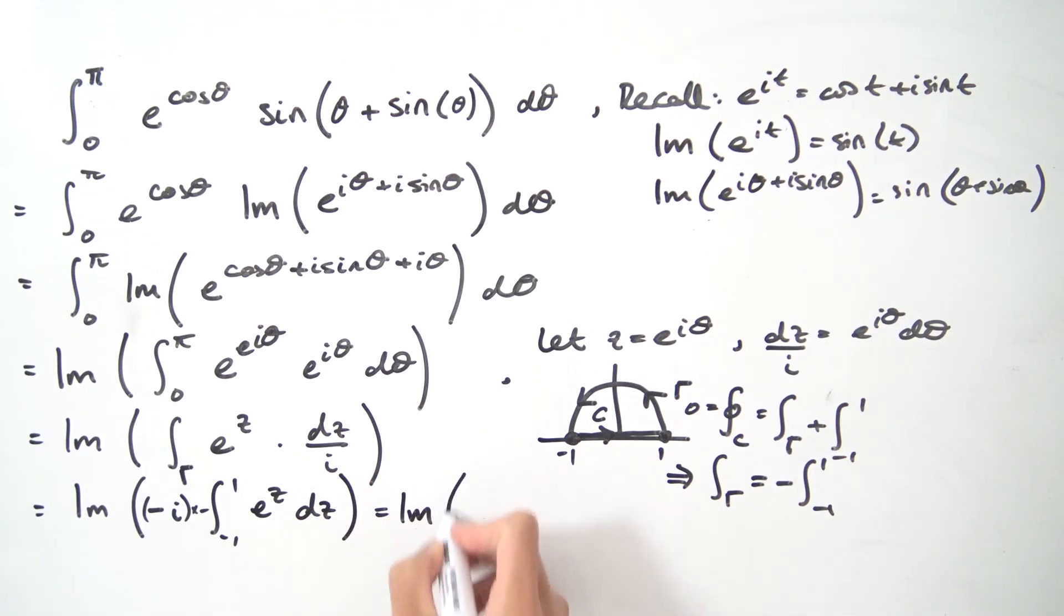So this is the imaginary part of i times the integral from minus 1 to 1 of e to the z dz, and we don't really have to use z here, we can just use any variable. This is really quite easy to evaluate.